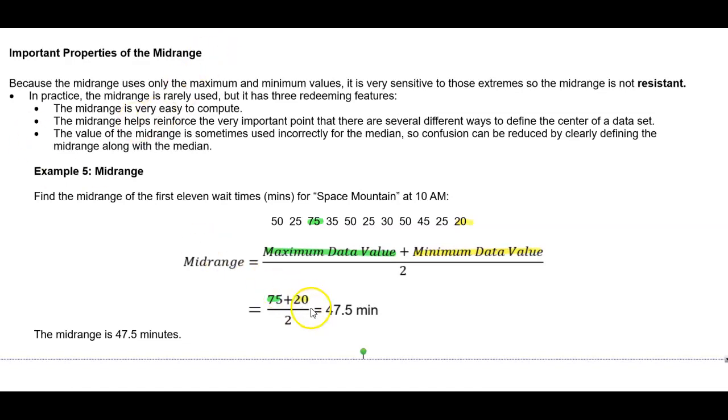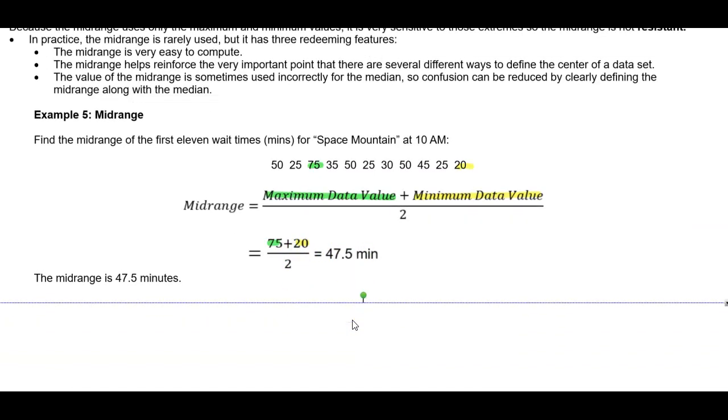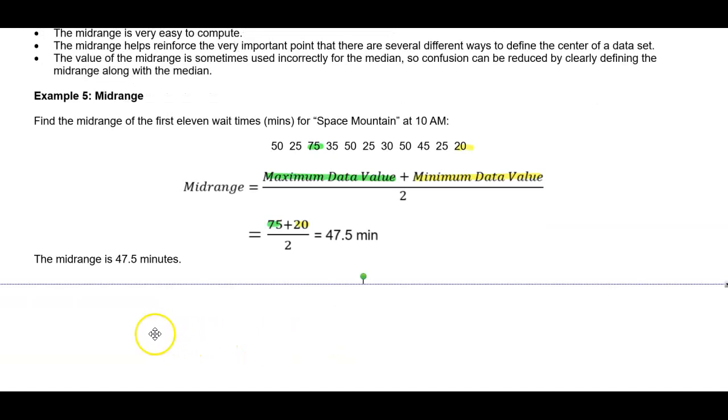We would take 75 plus 20 divided by 2, and we would get 47.5 minutes. Therefore, the midrange is 47.5 minutes.